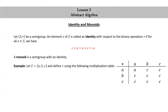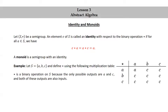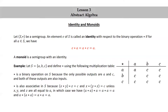Let's look at another example. Let S equal the set consisting of A, B, and C, and define ★ using the following multiplication table. ★ is a binary operation on S because the only possible outputs are A and C, and both of these outputs are also inputs. ★ is also associative because (X★Y)★Z = C and X★(Y★Z) = C unless X, Y, and Z are all equal to A. In which case, A★(A★A) = A★A = A, and (A★A)★A = A★A = A.